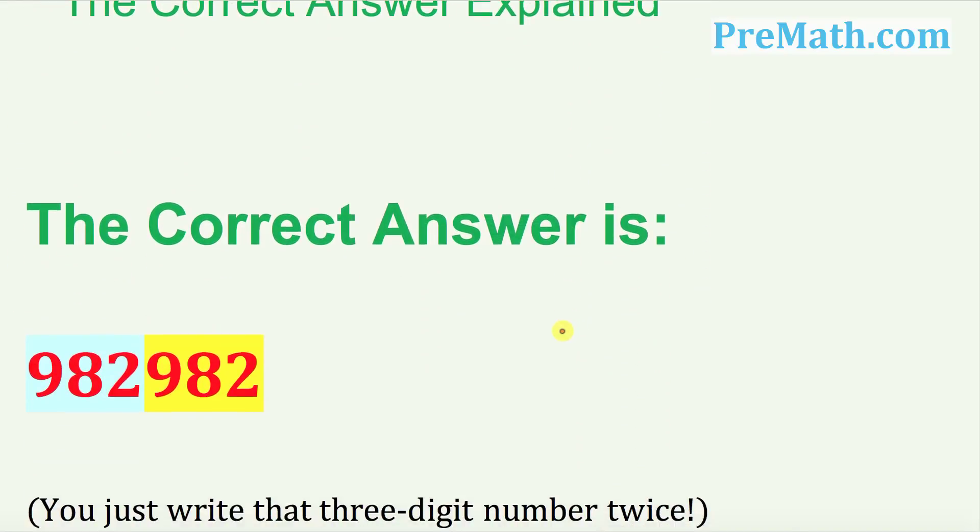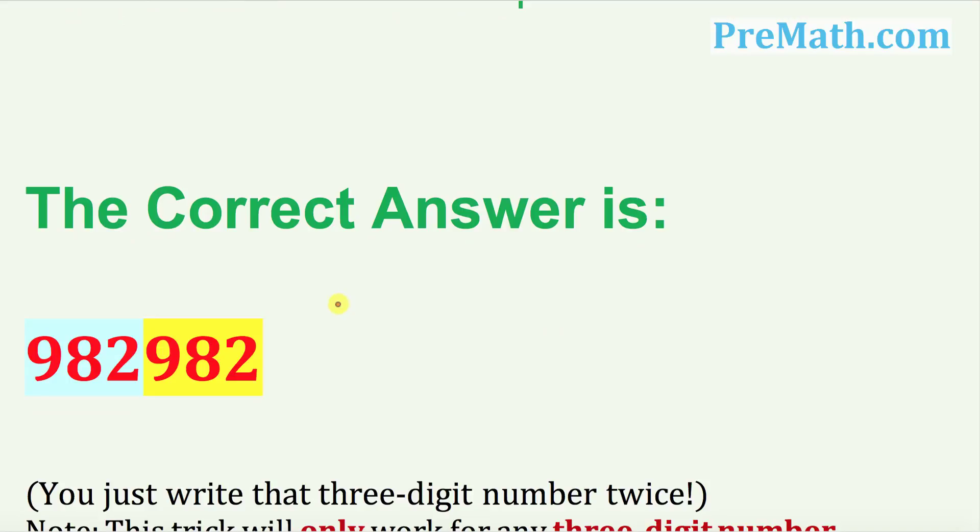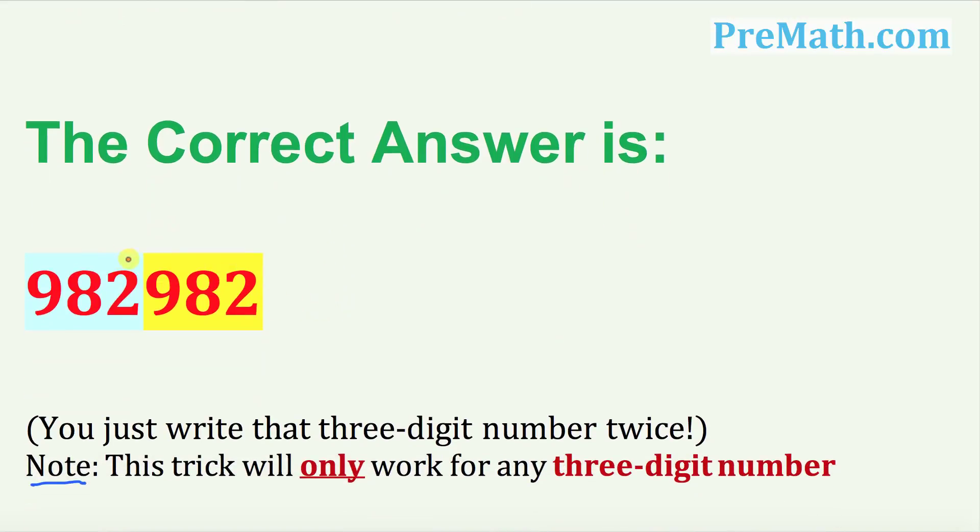So the correct answer is going to be simply 982, you write it twice. So you write 982 and 982 twice, and that is your complete answer.